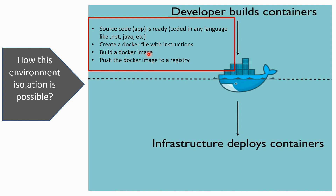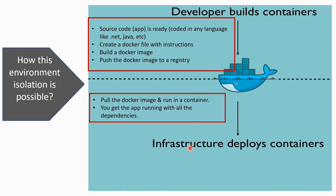Once the Docker image is built, the developer pushes it to a registry. Once pushed, the developer's job ends. Now the infrastructure engineer, maintenance engineer, or configuration engineer pulls the Docker image and runs it in a container. When this container image gets executed in your environment it converts into a running container, and you get an app running with all its dependencies inside the container.